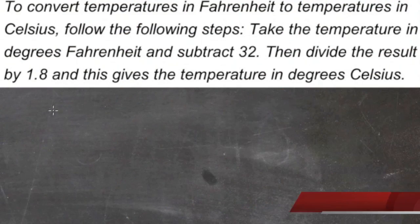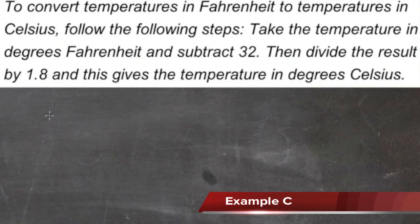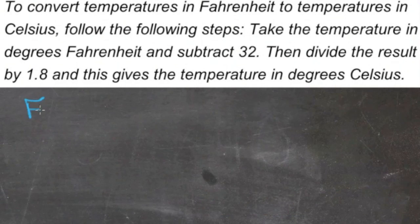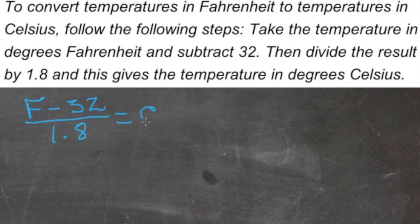To convert Fahrenheit to Celsius, take the temperature in Fahrenheit and subtract 32, then divide the result by 1.8. We need to write an equation that shows this conversion process, and then convert 50 degrees Fahrenheit into degrees Celsius. If we let F be the temperature in Fahrenheit, then F minus 32 divided by 1.8 equals degrees Celsius, which we'll call C. So there's our equation.